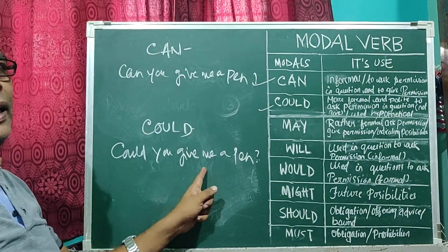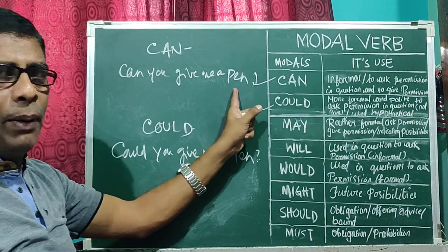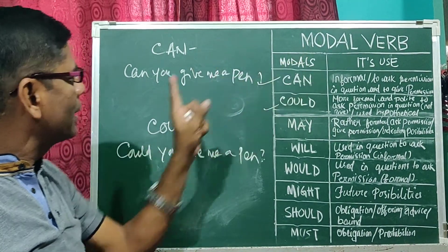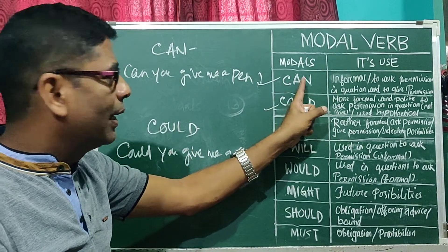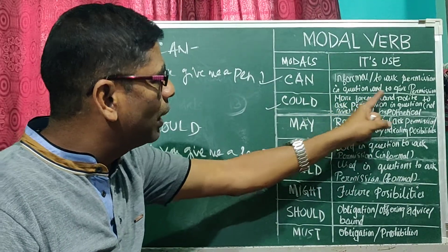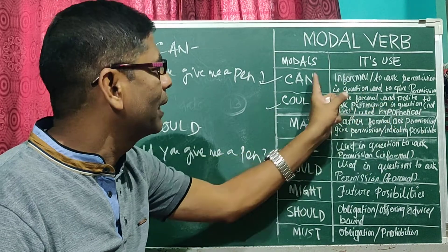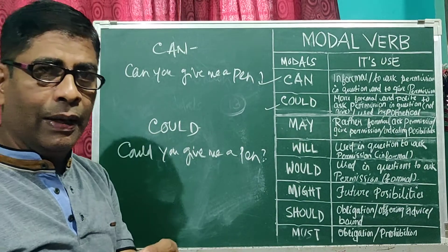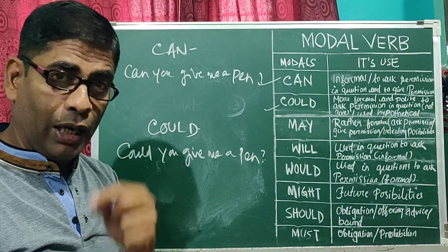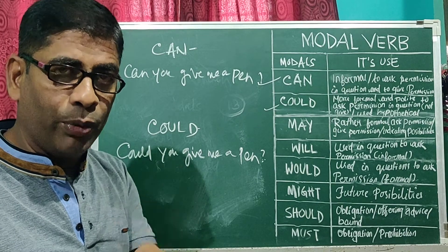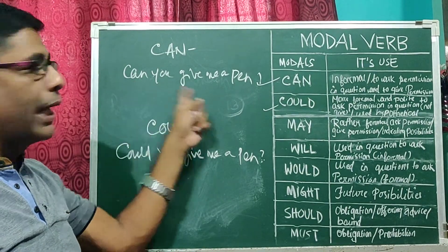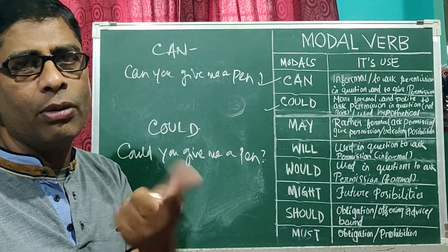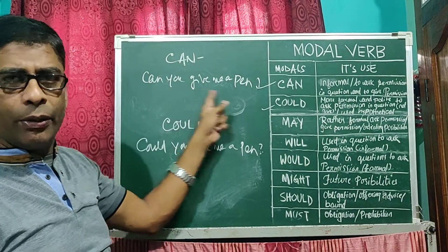Both sentences have the same meaning: can you give me a pen, could you give me a pen. But what is the difference? In modal usage, the difference between can and could is: can is informal, could is more formal and polite. The meaning is the same. Suppose I want to get a pen from you — at that time I ask: can you give me a pen, because I need not use formality with my students.